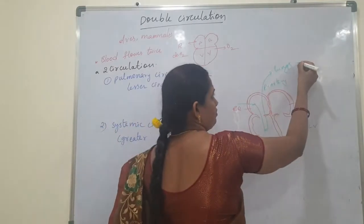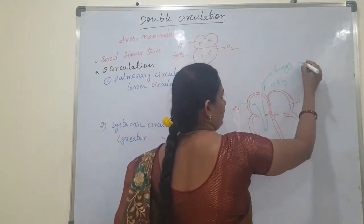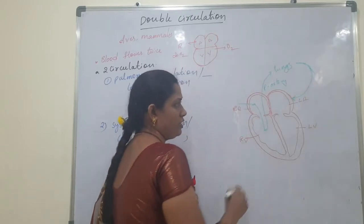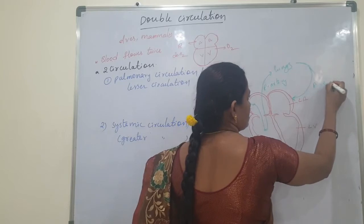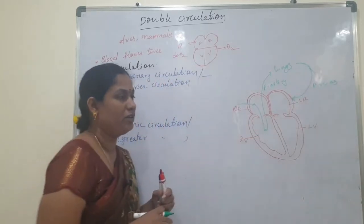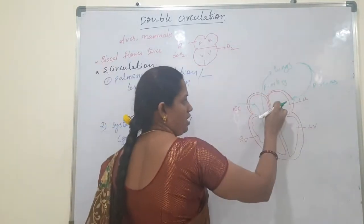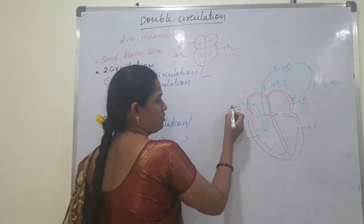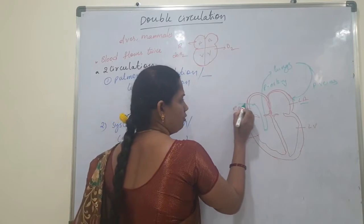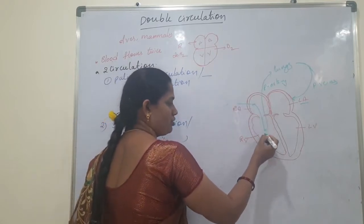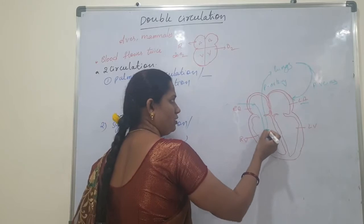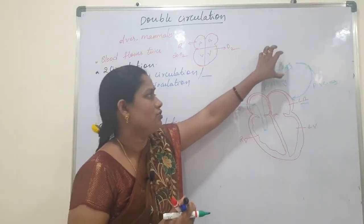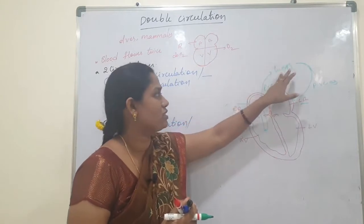After purification, the oxygenated blood flows into the left atria through the pulmonary veins. So the blood flows: right atria → right ventricle → lungs (via pulmonary artery). In the lungs, purification takes place.